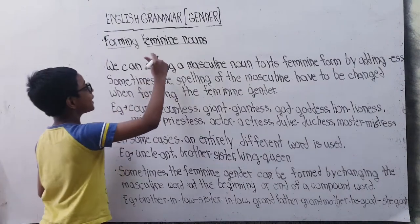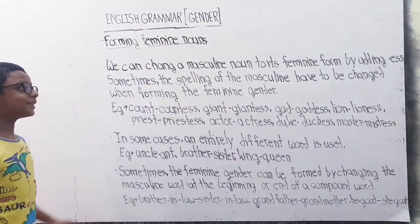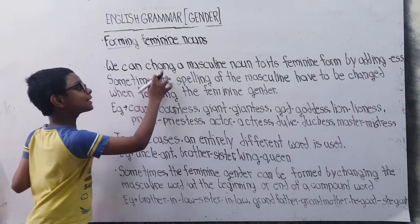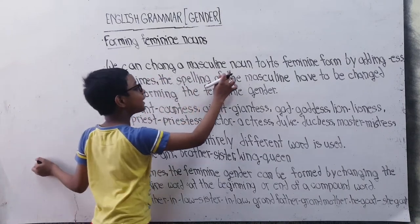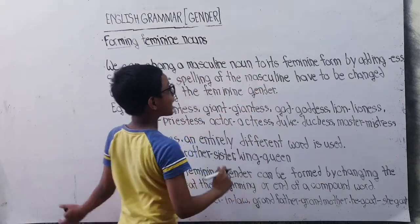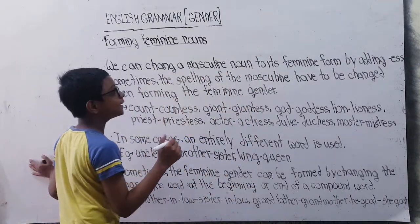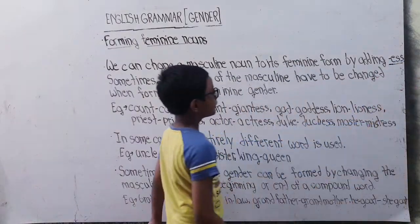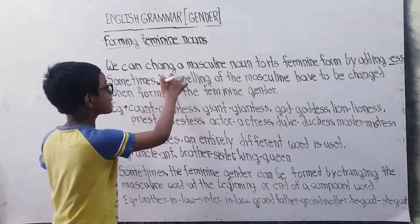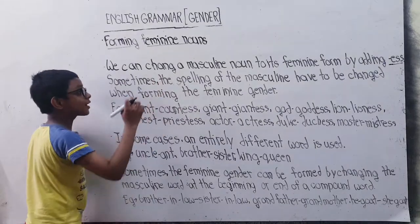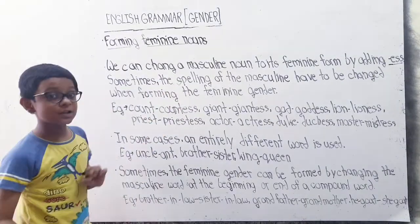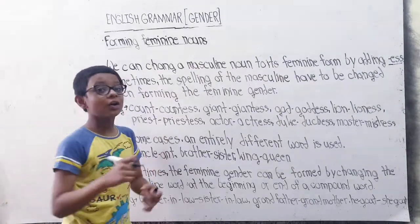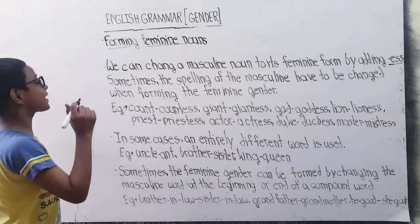Forming Feminine Nouns: We can change a masculine noun to its feminine form by adding ESS. In most masculine nouns, if we make feminine nouns, then we add ESS.